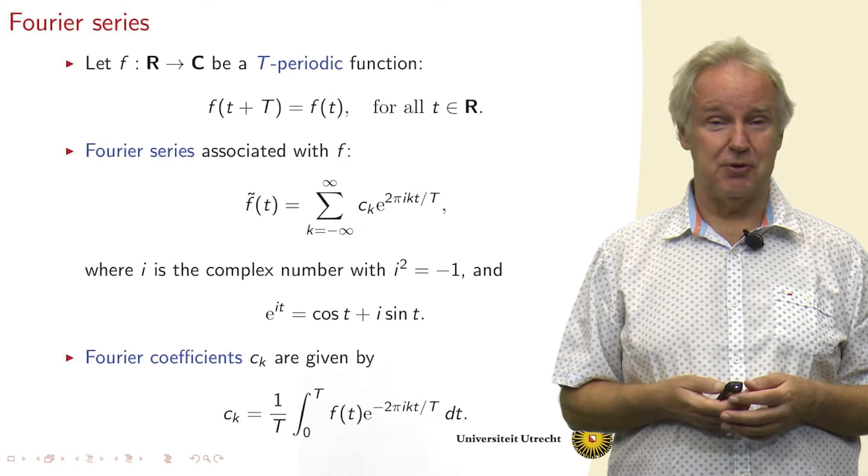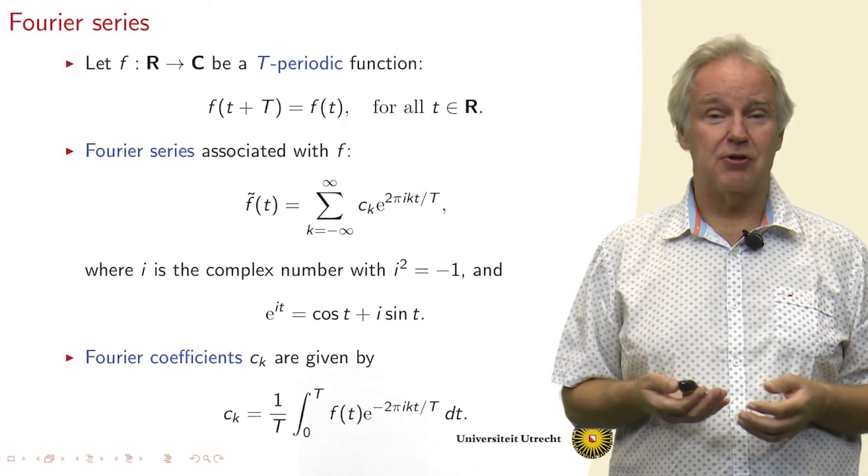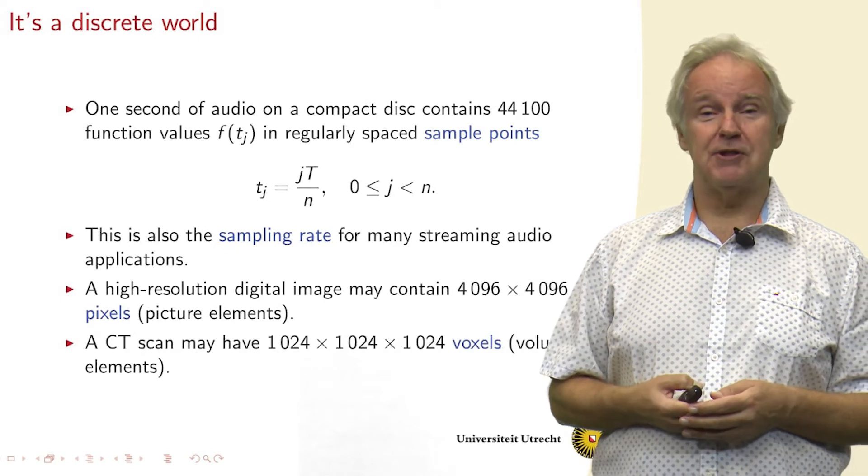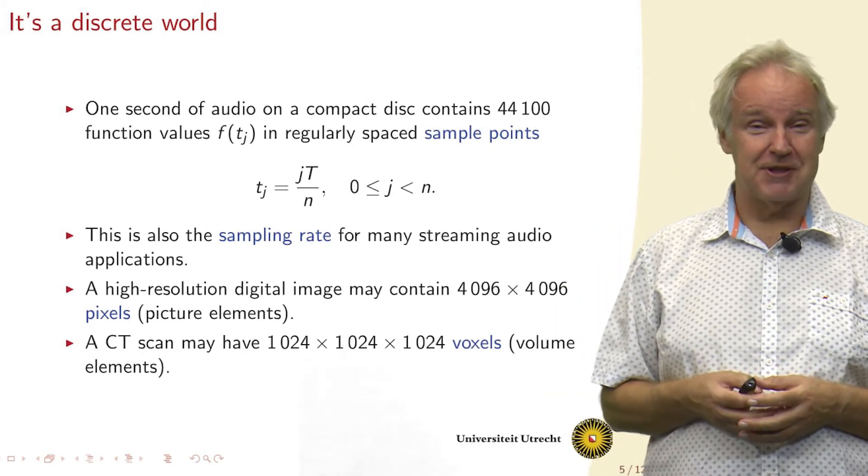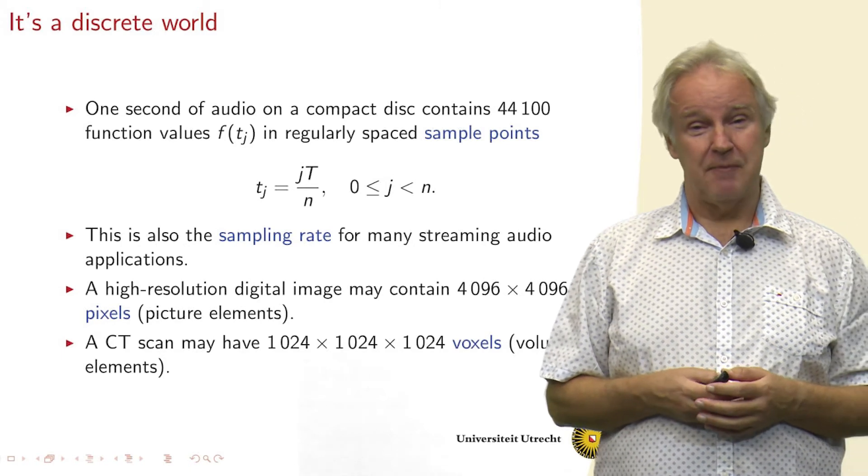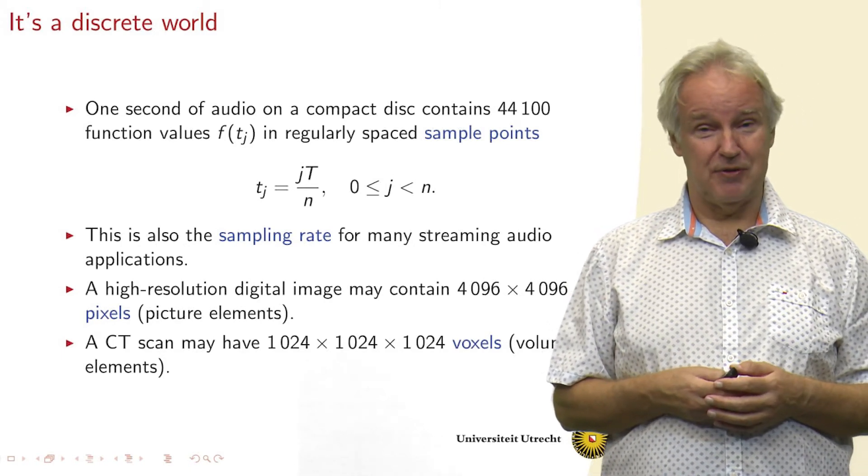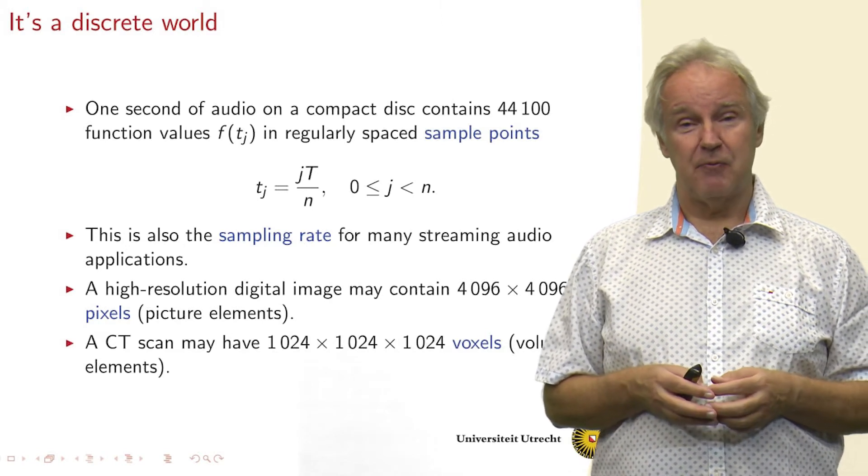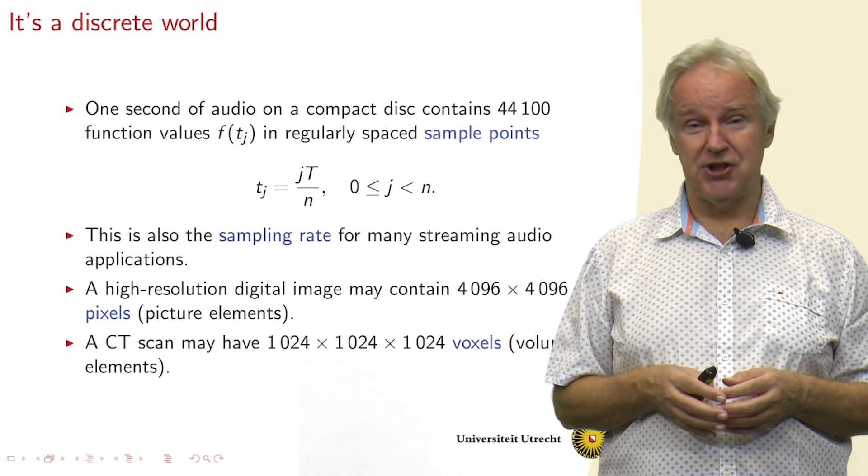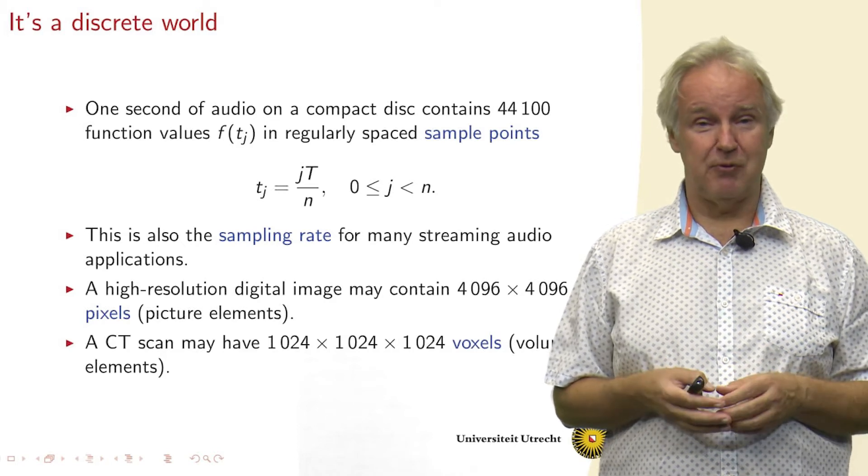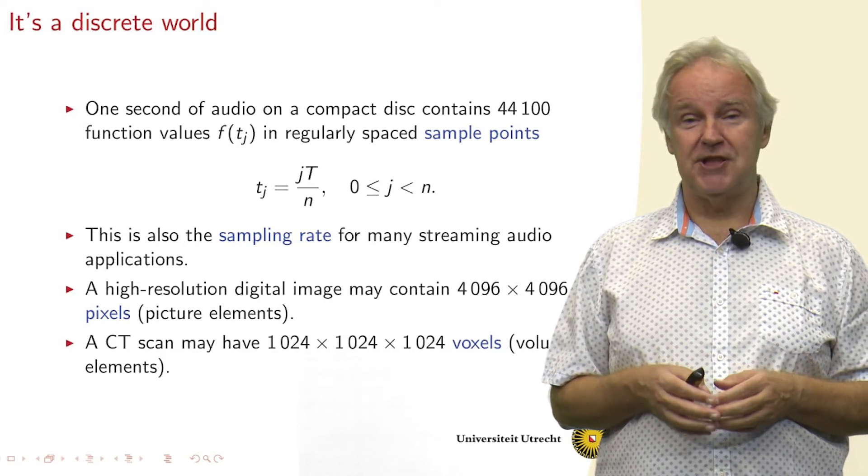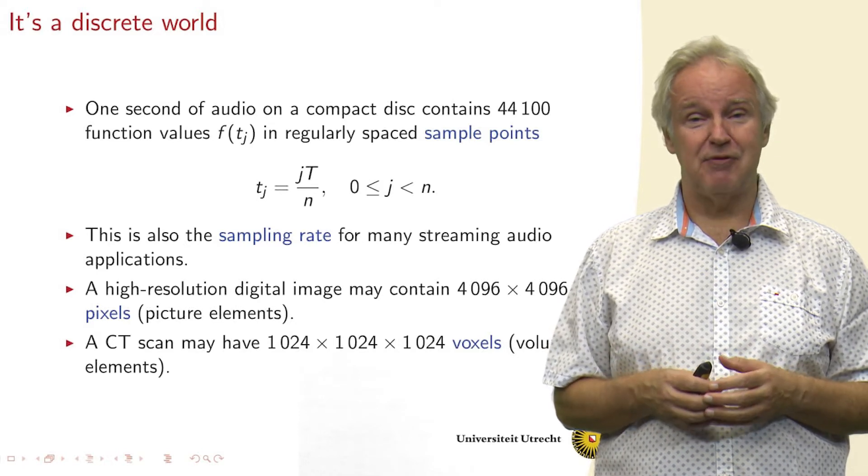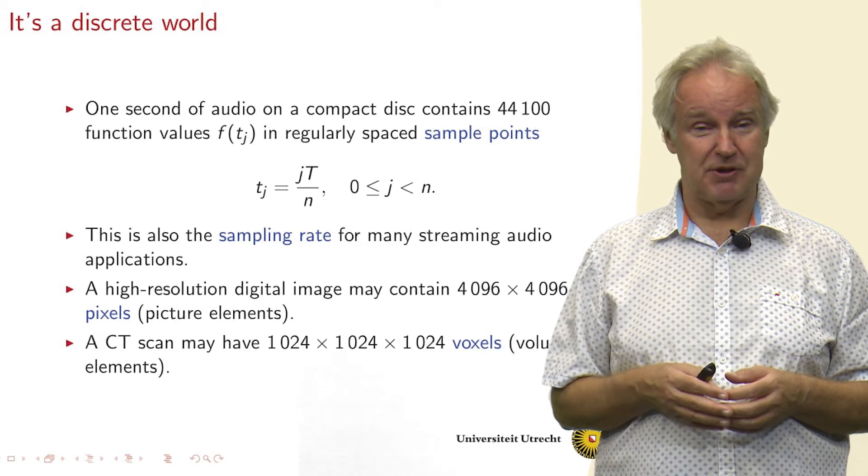So this is a way of computing this in a continuous fashion. But then our world is discrete, at least our computer world is discrete. And if we sample the function at regular intervals, then we get sampling points tj, time j if you want, which is j times the period, capital T, divided by n if we have n sample points.